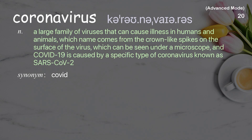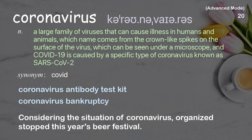Coronavirus: A large family of viruses that can cause illness in humans and animals, whose name comes from the crown-like spikes on the surface of the virus, which can be seen under a microscope. COVID-19 is caused by a specific type of coronavirus known as SARS-CoV-2. Examples: Coronavirus antibody test kit. Coronavirus bankruptcy. Considering the situation of coronavirus, organizers stopped this year's beer festival.